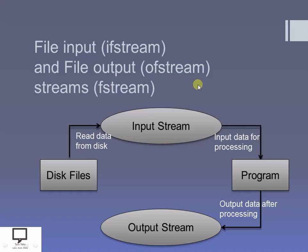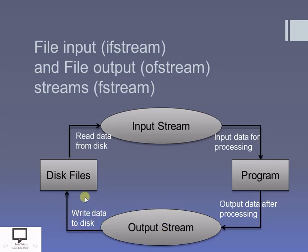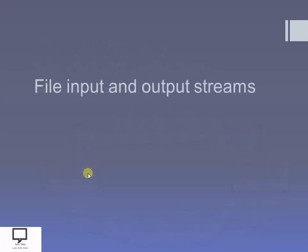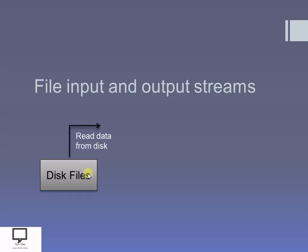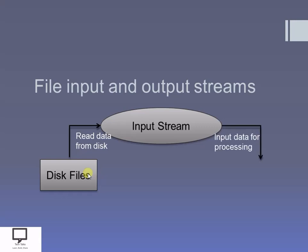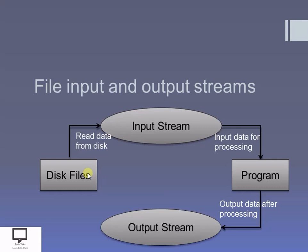To summarize: if I want to perform input I use ifstream, which is responsible for reading. The read data is sent to the program for processing, and the processed data is ready for writing. The ofstream, the output stream, takes the responsibility to write the data back onto the file. This process is performed repeatedly: from the disk file, read data with the help of input stream, send it for processing, then write processed data with the help of output stream back to the disk file.